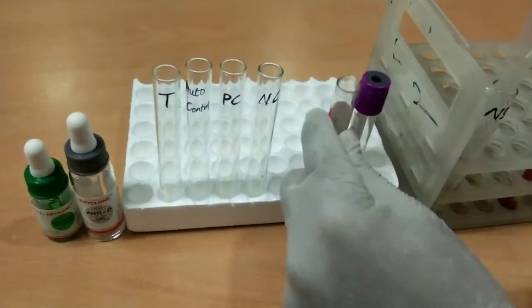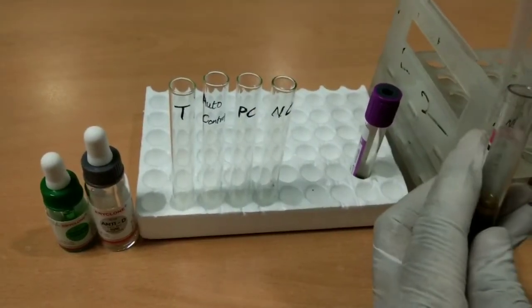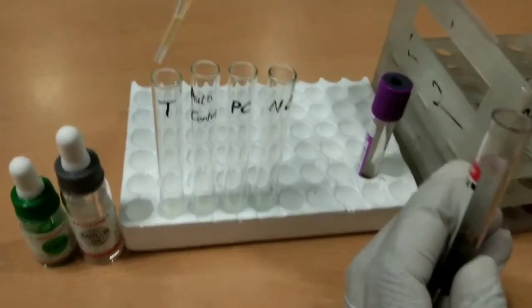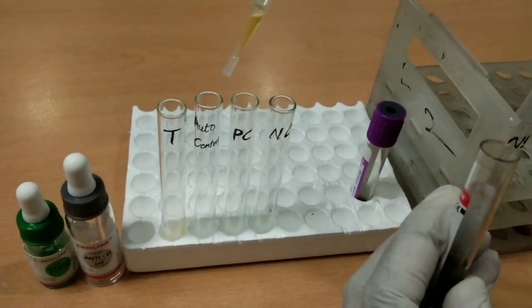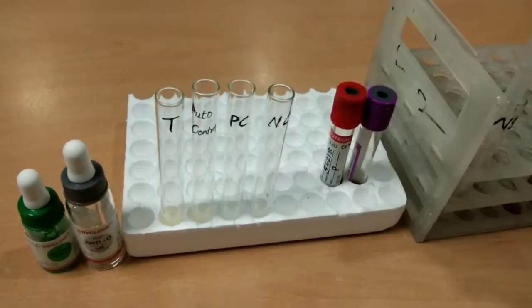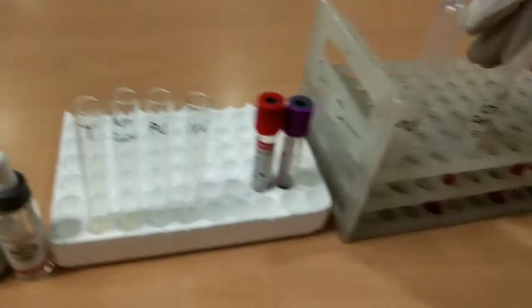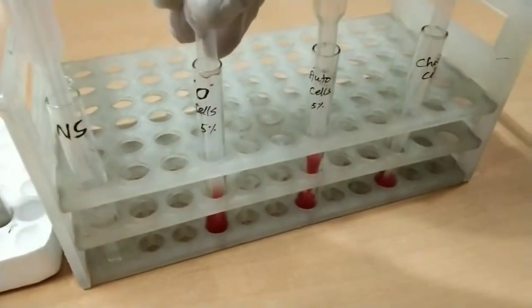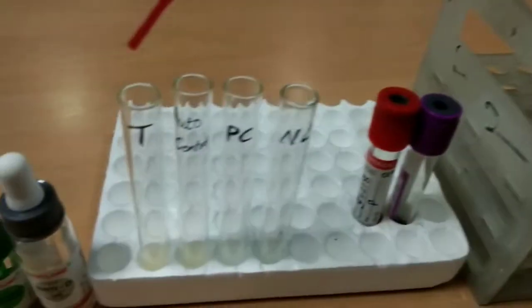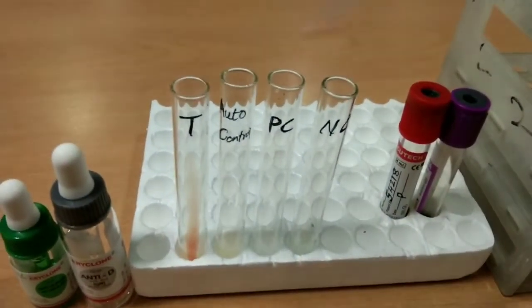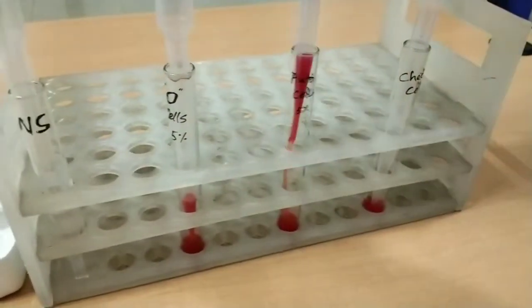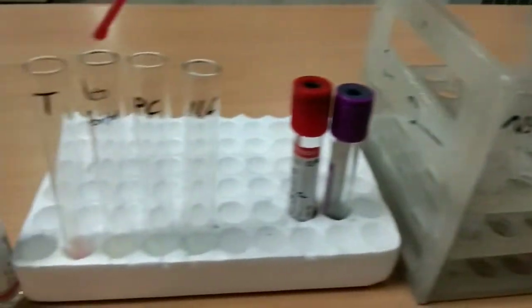Add two drops of patient serum into the test tube and two drops of patient serum into the auto control tube. Then add 5% O-positive cells into the test tube and one drop of auto cells into the auto control tube.